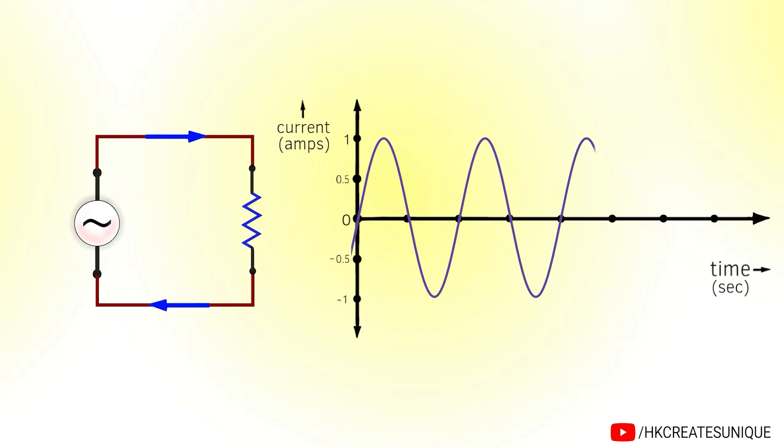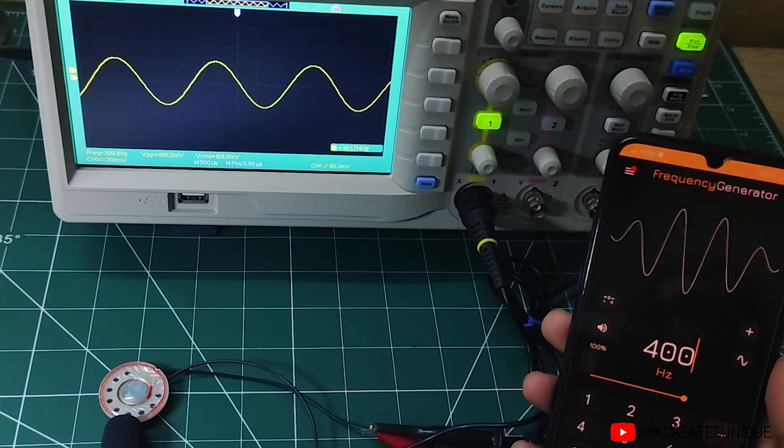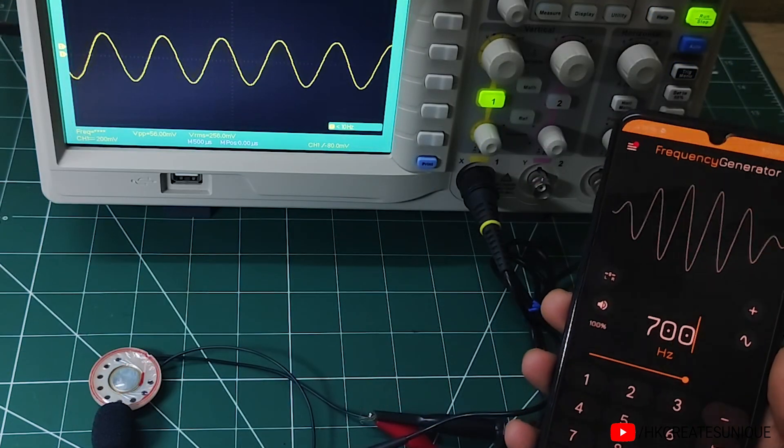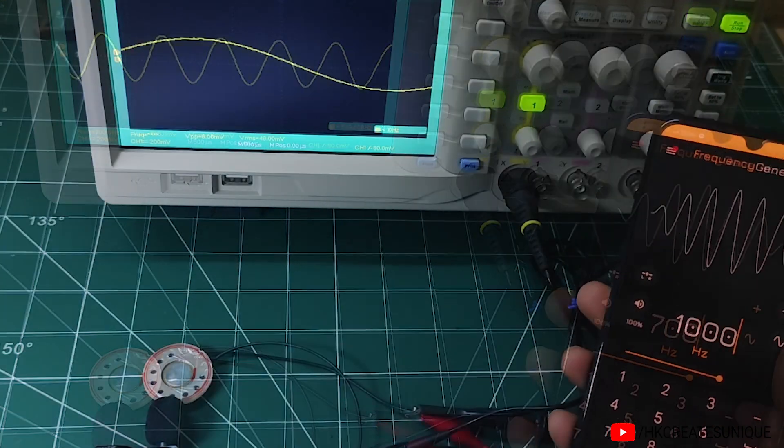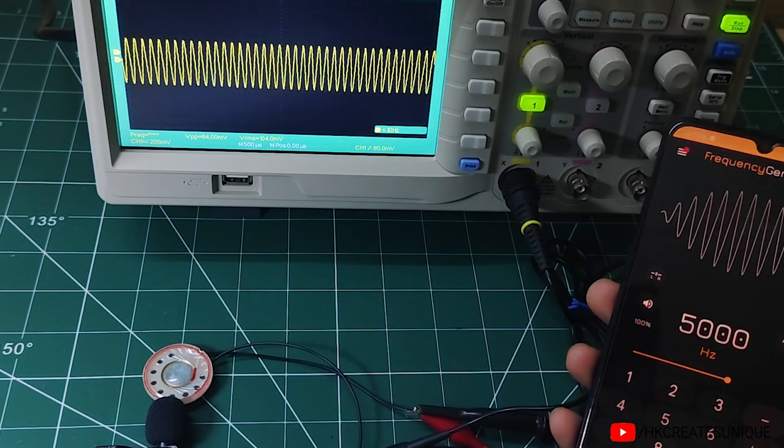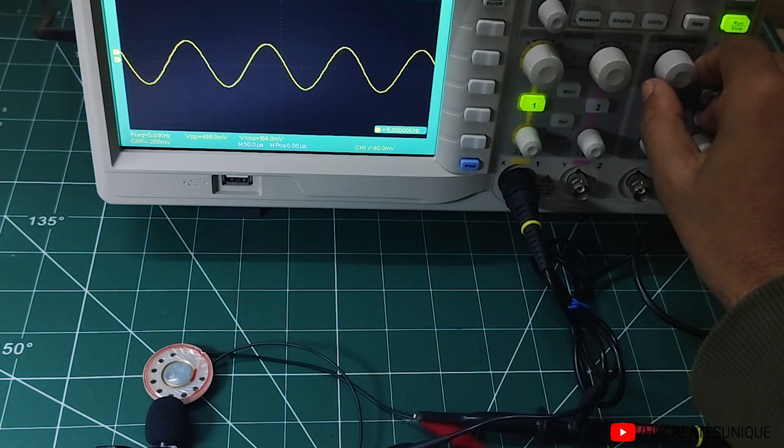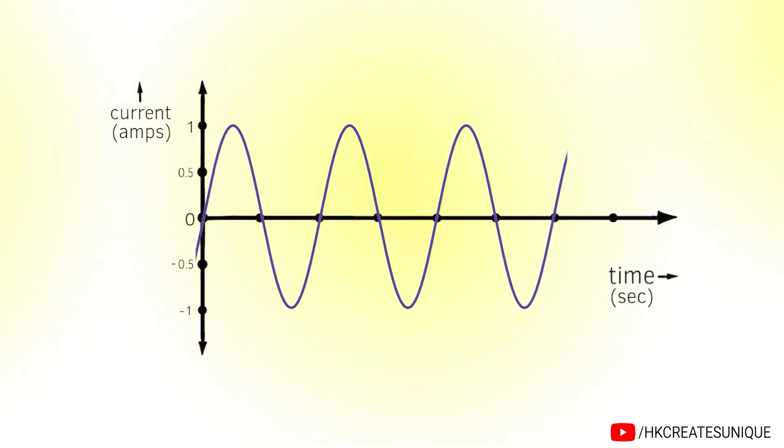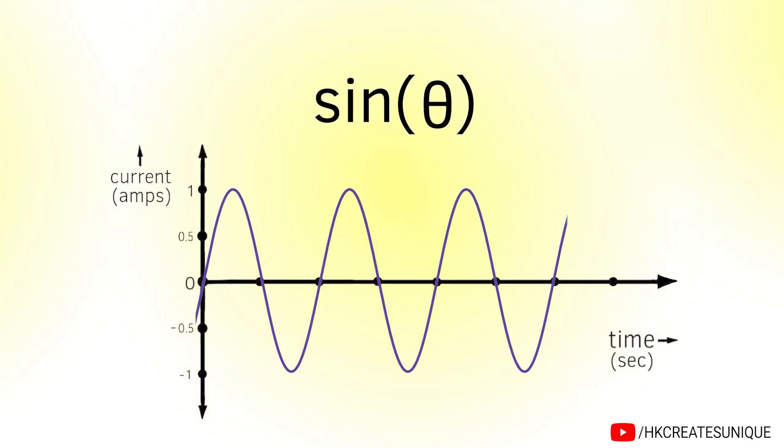And this is the current versus time graph. When a sine wave AC voltage is connected to a speaker, it sounds like this.